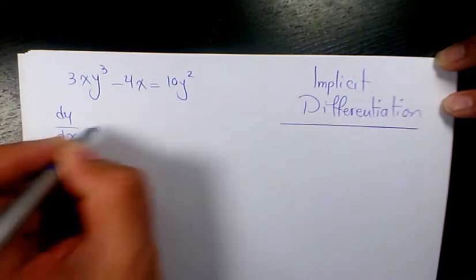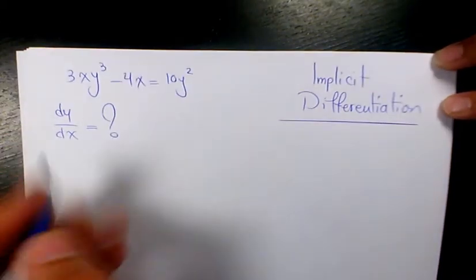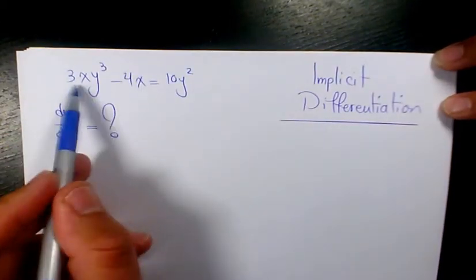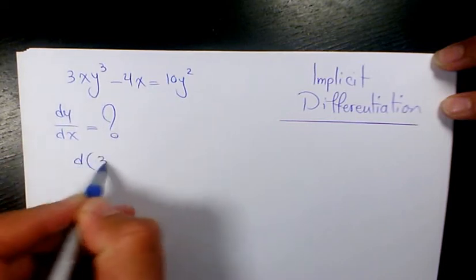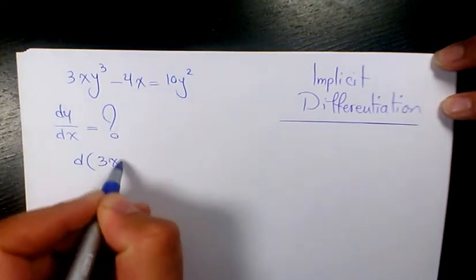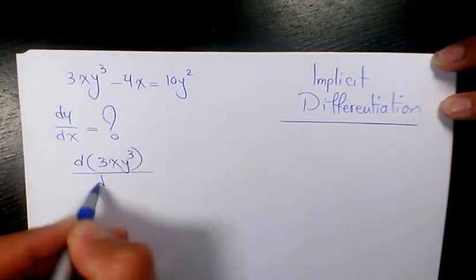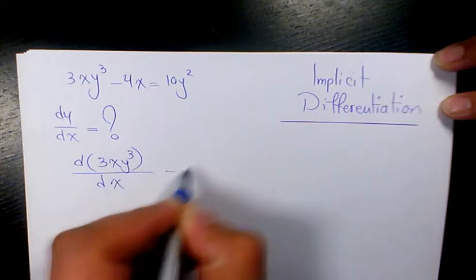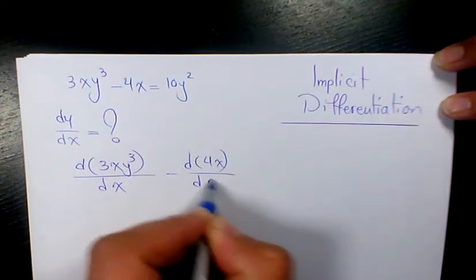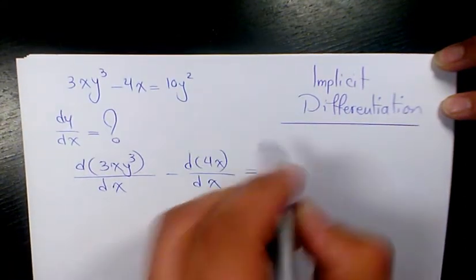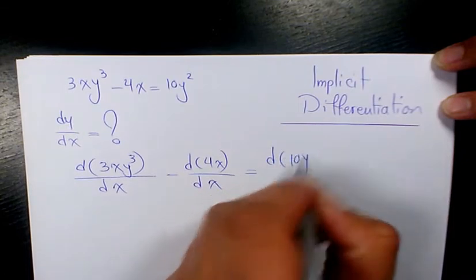I need to find dy/dx. So I need to start from here: the derivative of 3xy³ with respect to x, minus the derivative of 4x with respect to x, equals the derivative of 10y² with respect to x.